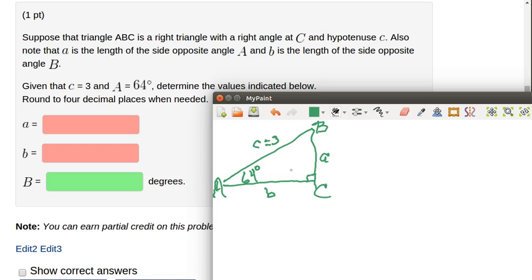And we're asked to find the other three measurements: the a, the b, and the B. Well here's what we know. Since this is a right triangle, we know that the sine of A, but I already know what A is, so it's 64 degrees, is equal to the opposite, which is a,